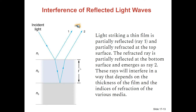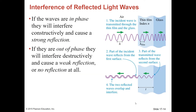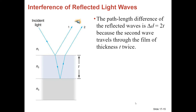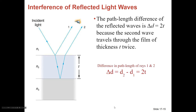We look at the thickness of this intermediate medium — the thin film in question. If the waves are in phase, they interfere constructively and cause a strong reflection. If they are out of phase, they interfere destructively and cause a weak or no reflection. The path length difference delta-D equals two times the thickness T, because the second wave travels through the film twice — down and then up. So the path difference D2 minus D1 equals 2T.